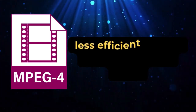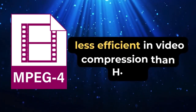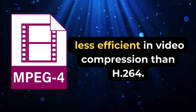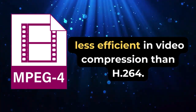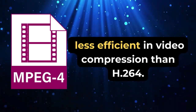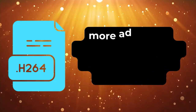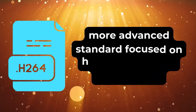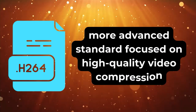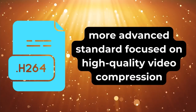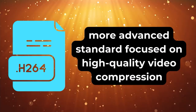In summary, MPEG-4 is a versatile standard for various types of multimedia content but is less efficient in video compression than H.264. H.264 is a more advanced standard focused on high-quality video compression, widely used for HD content and online streaming.